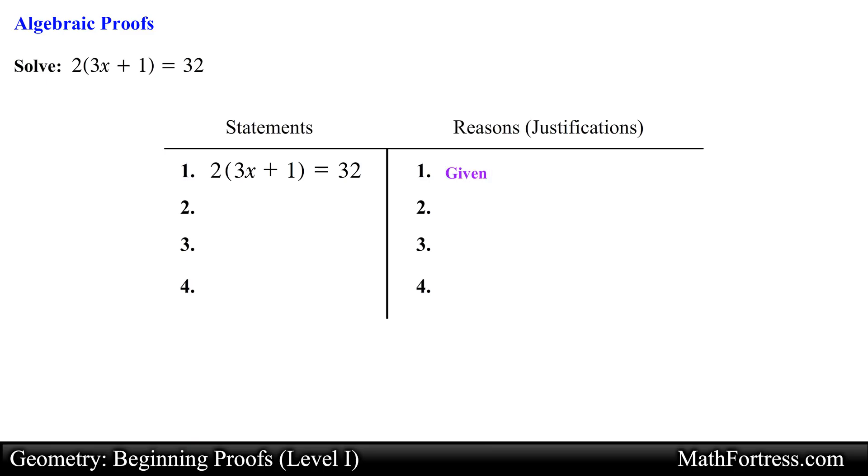Next we proceed in solving the equation so we first apply the distributive property and distribute 2 into each term. We then write the reason or justification for this step. In this case we write distributive property since we applied the distributive property to obtain the new statement.